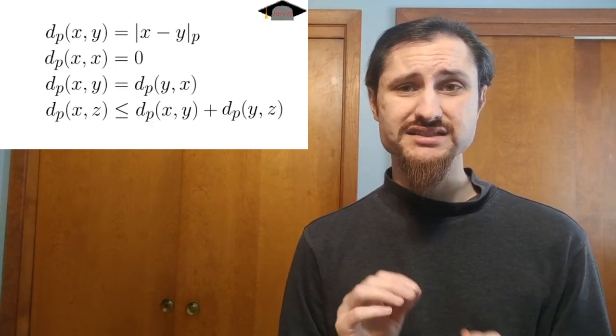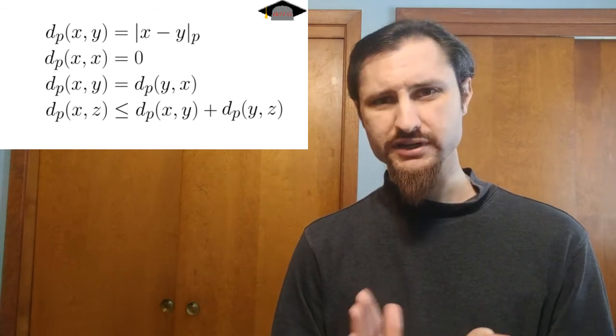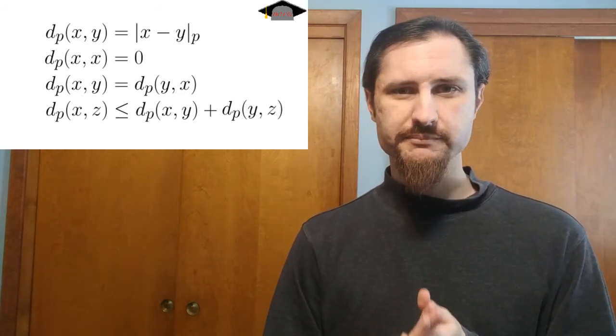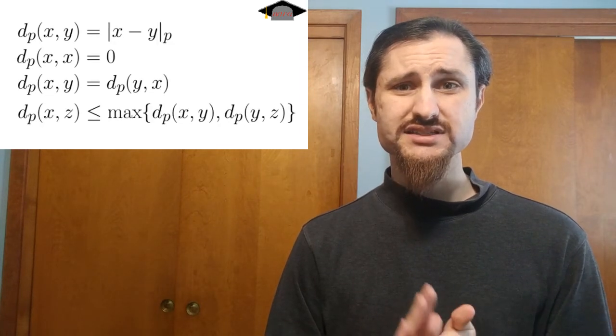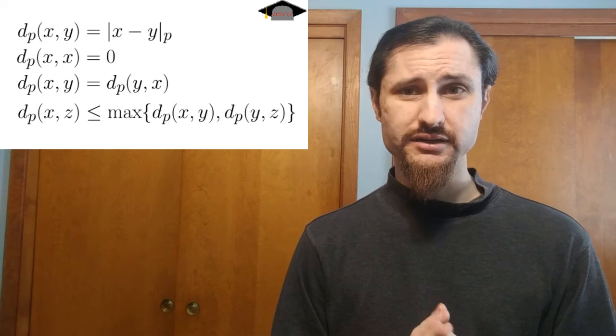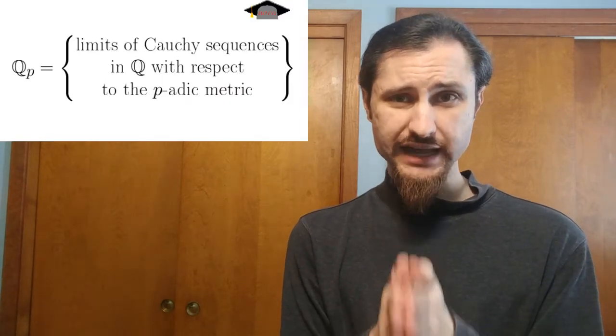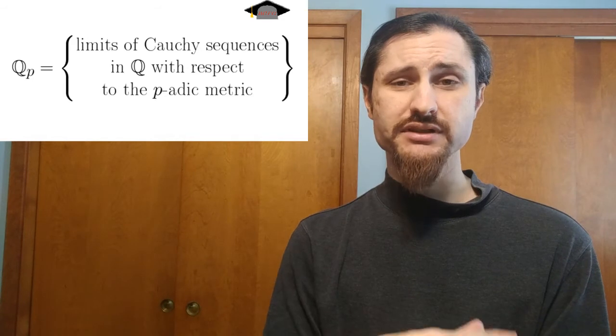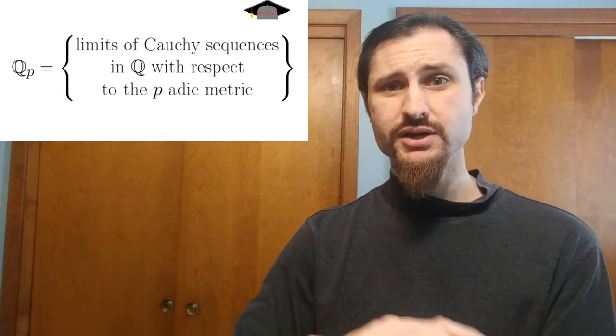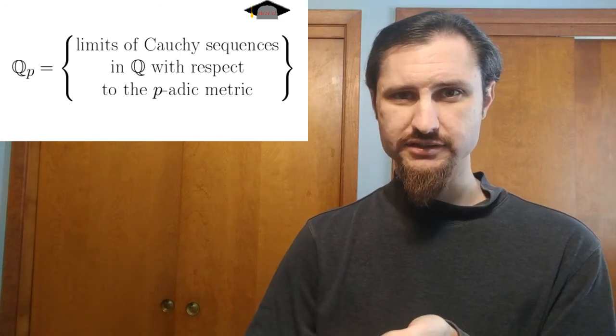In fact, this metric is sometimes called an ultrametric because instead of just the usual triangle inequality, the one that we had from the usual on the rational numbers, this one satisfies the strong triangle inequality, which means exactly what's written here. So then, just like how the real numbers are the topological completion of the rational numbers with respect to that usual distance metric, the field of p-adic numbers is the topological completion of the rational numbers with respect to the p-adic metric.